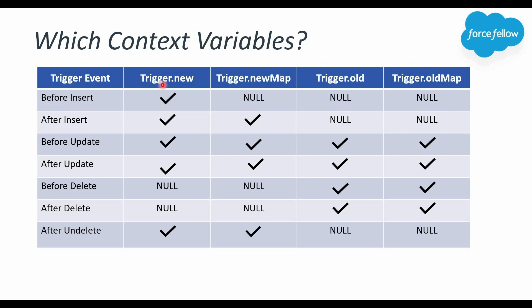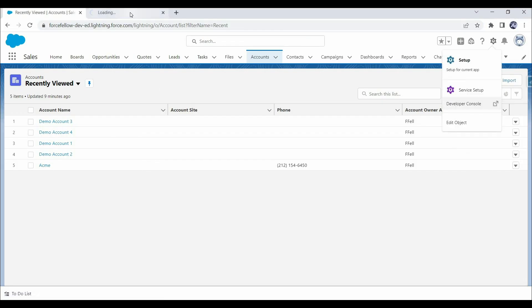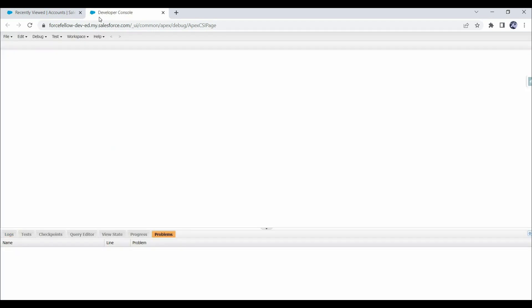Now, considering all these points, let's move into the practical implementation. We'll open our Developer Console — you can use VS Code as well — and here we'll first create a trigger on the account object.